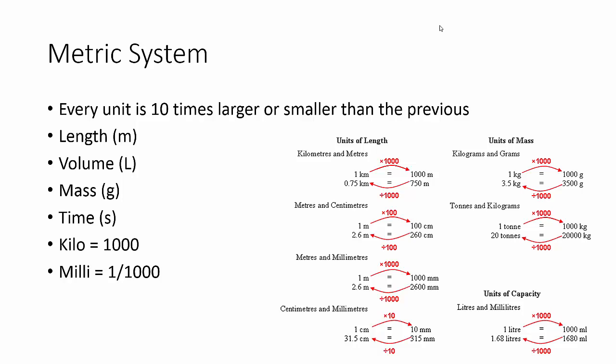I've included some examples for units of length and units of mass. For kilometers and meters: if you want to go from meter to kilometer, you divide by a thousand; from kilometer to meter, you multiply by a thousand. So one kilometer is one thousand meters. Point seven five kilometers is seven hundred and fifty meters, and vice versa — seven fifty divided by one thousand gives you point seven five.